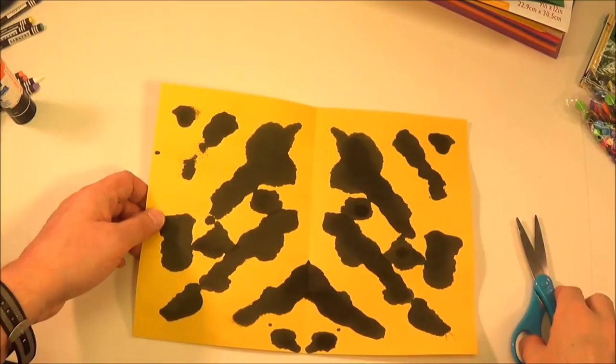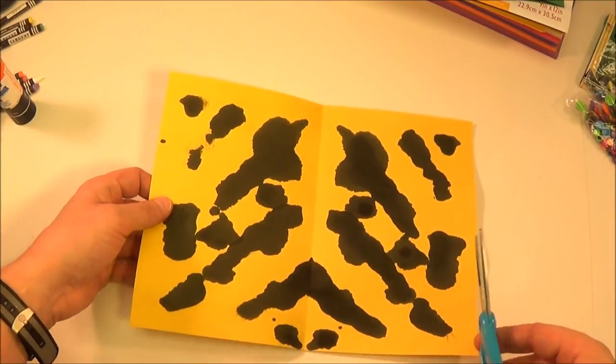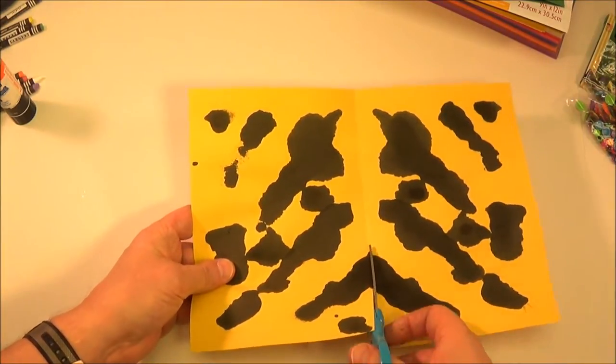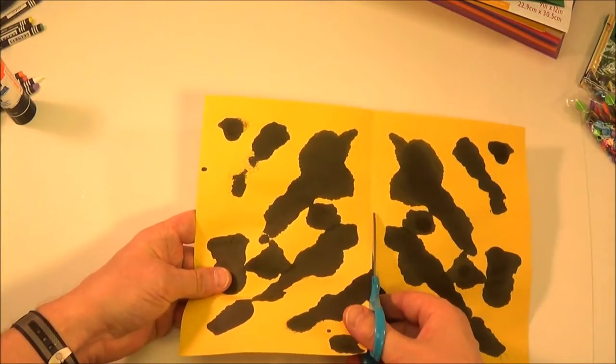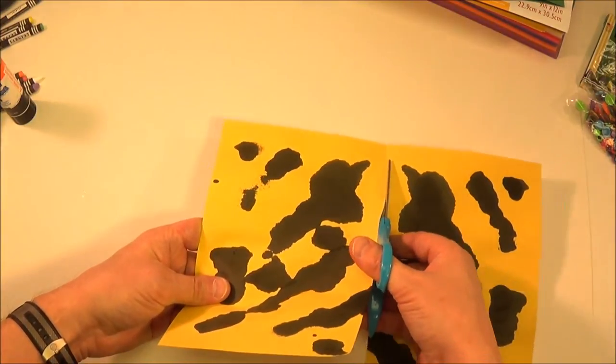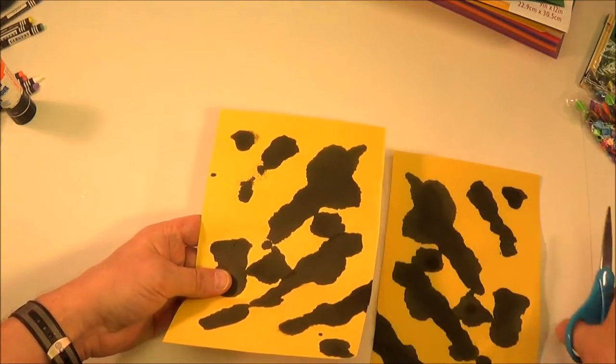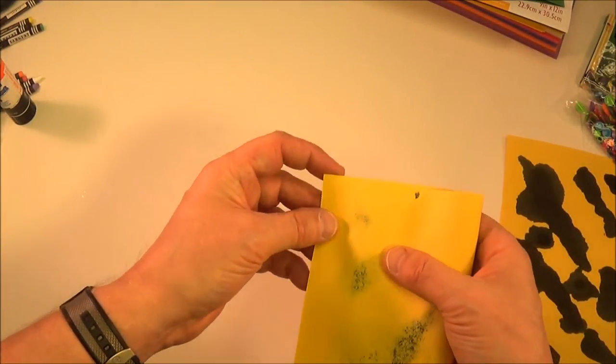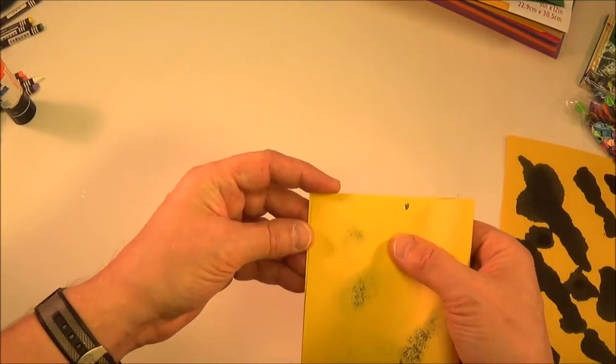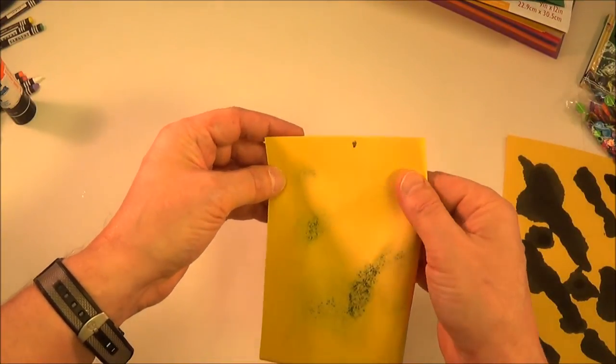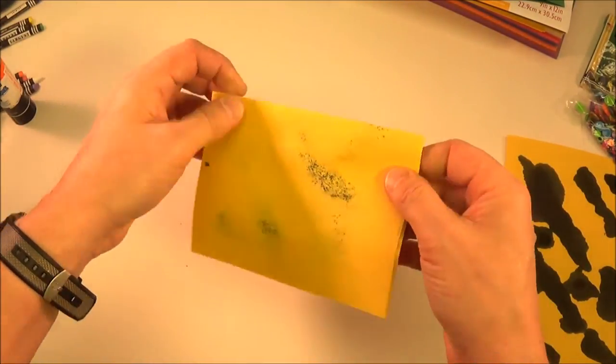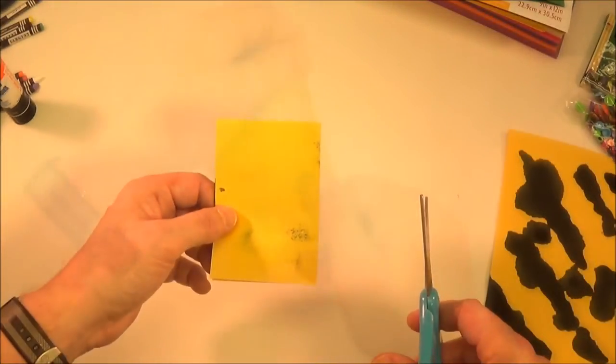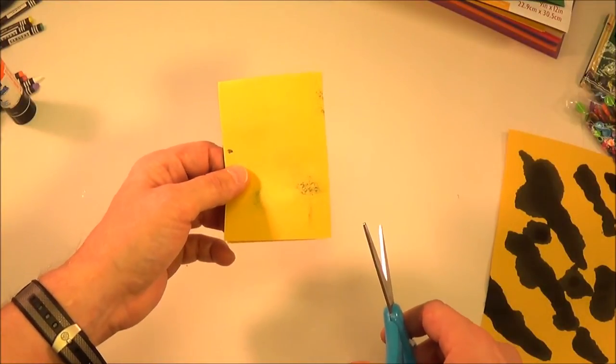When the ink is dry, cut the frog body out of the sheet. Fold one half again in quarters. While still folded, cut a leg shape out, making four legs.